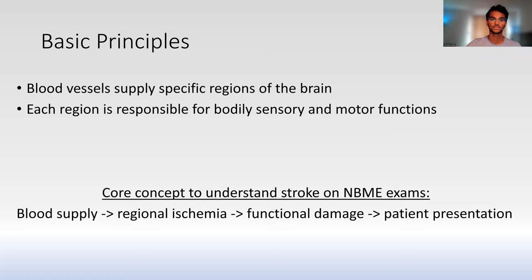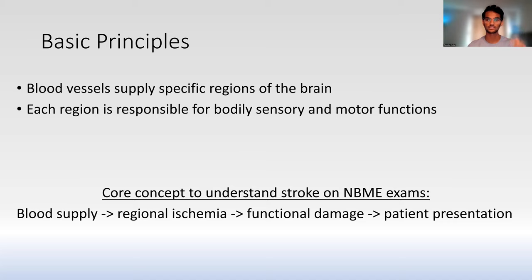We'll start with some basic principles. Each region is responsible for bodily sensory and motor functions, and each region of the brain requires blood vessels. The core concept to get these stroke questions right on your NBME exams: think of the blood supply, and when you lose that blood supply, it leads to ischemia. That ischemia leads to functional damage to the regions of the brain, which is what leads to the patient presentation. So we'll work backwards from patient presentation through the damage to the ischemia to the blood supply.